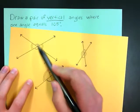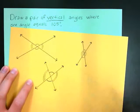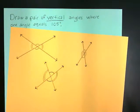So we're trying to create these two lines that cross each other where these vertical angles are equal to each other. In our case, we want one of those angles to equal 105 degrees.